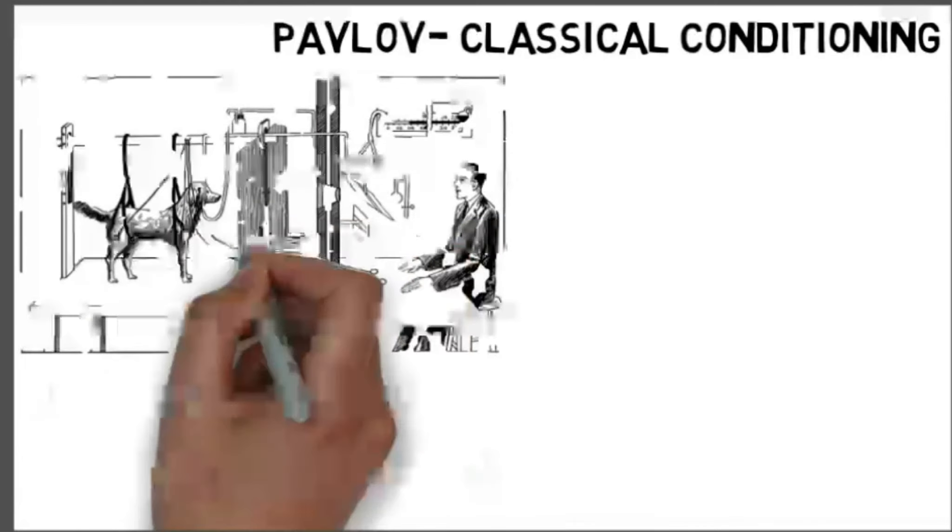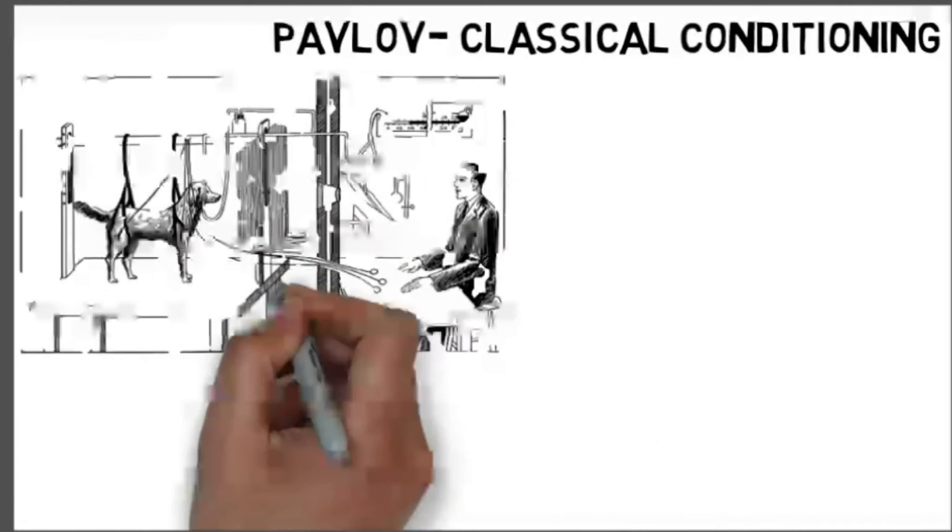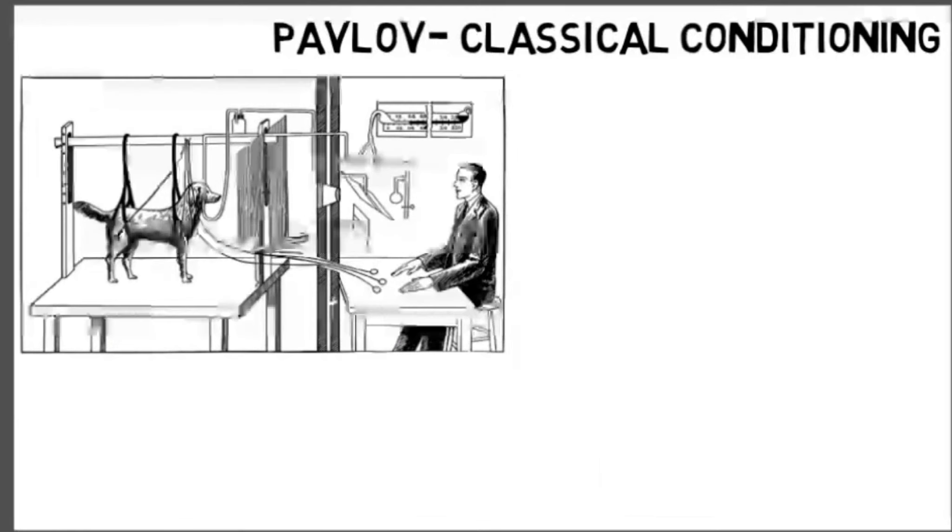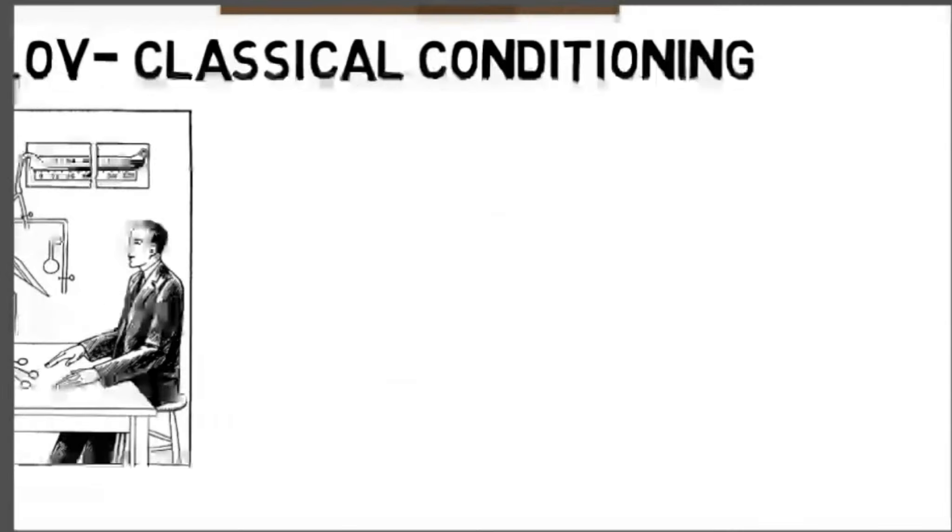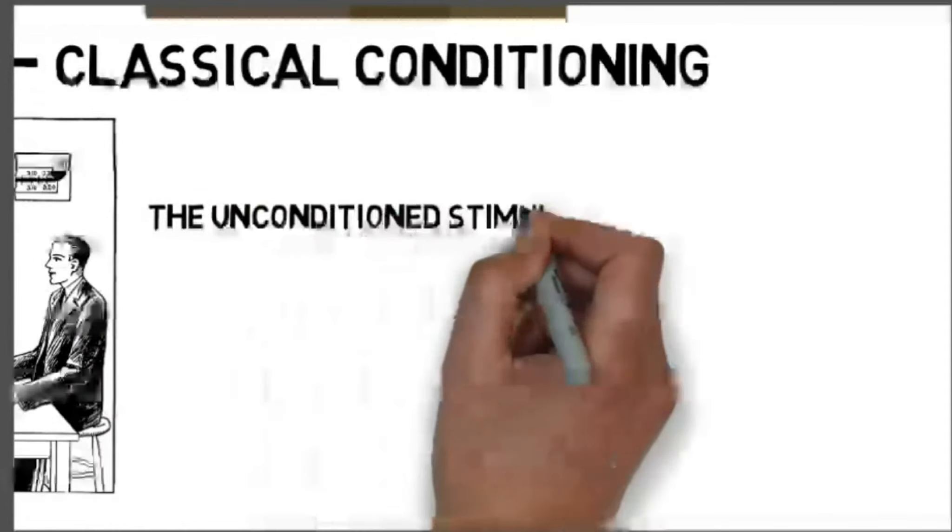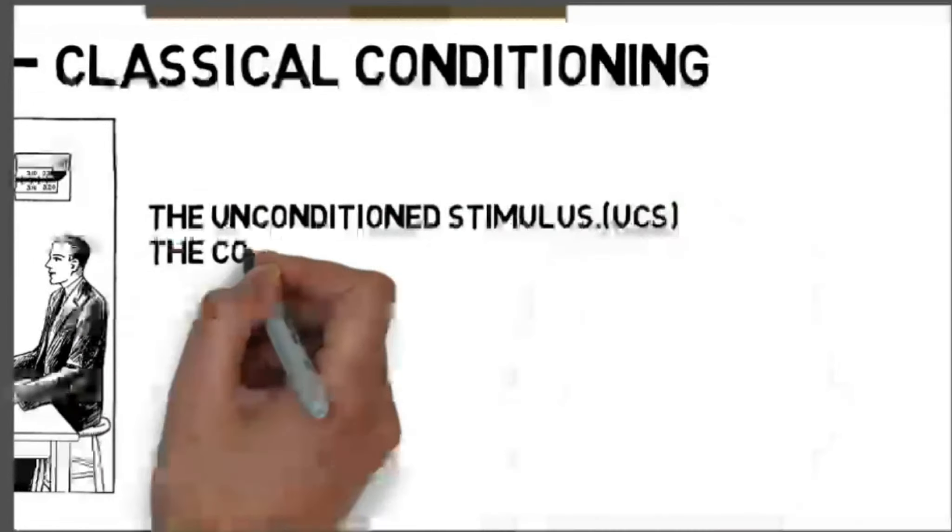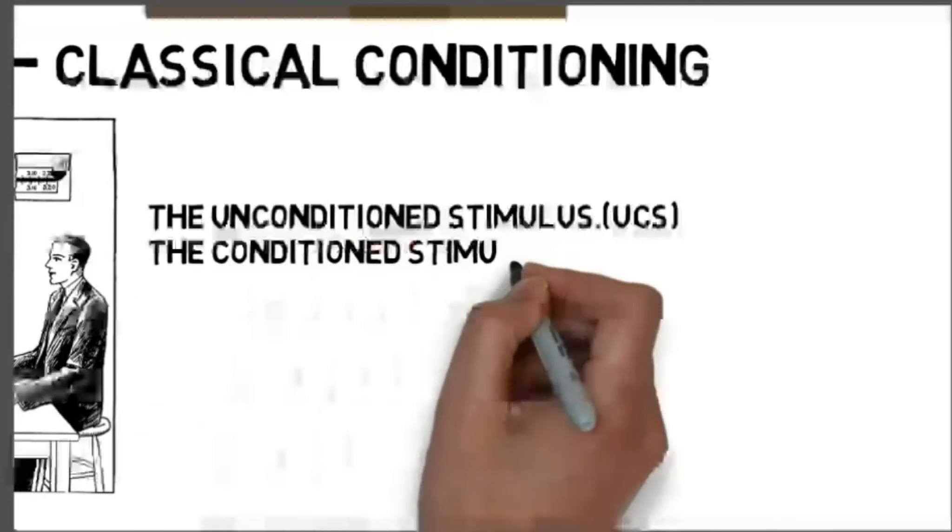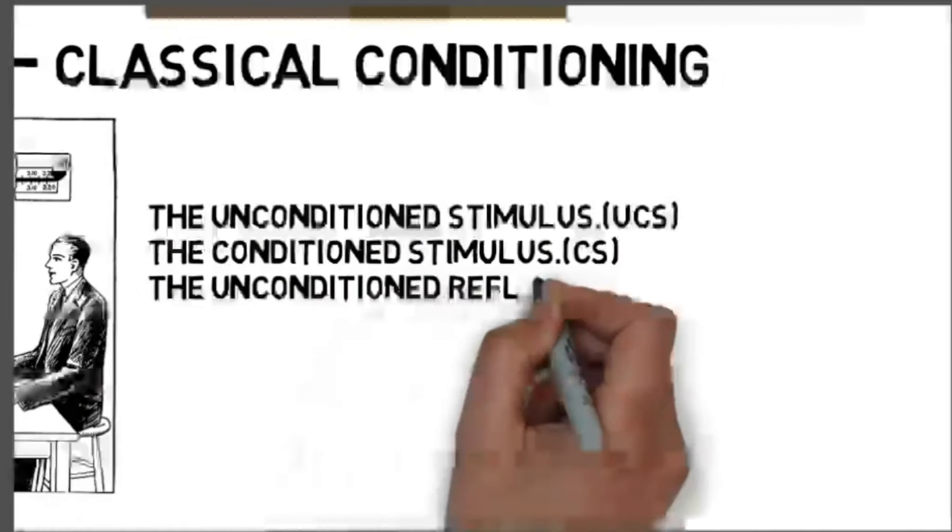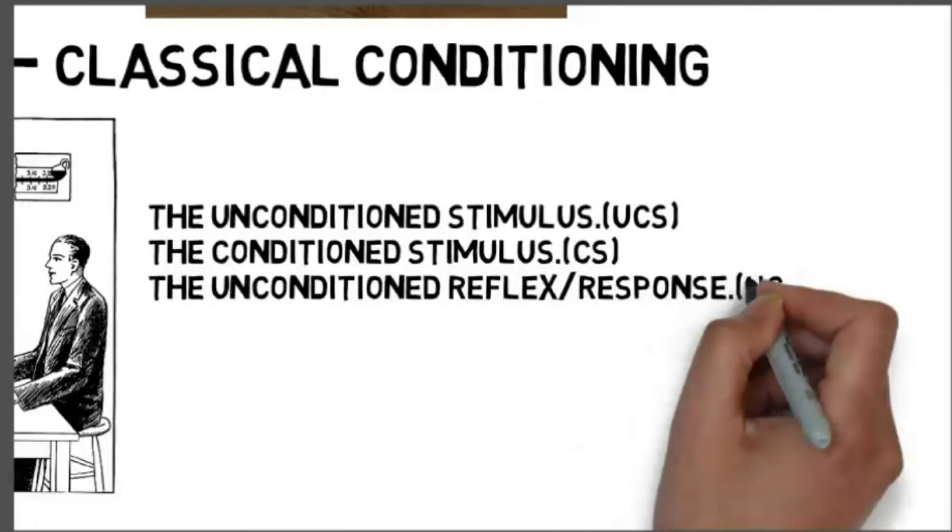We can gain a better understanding of classical conditioning by looking at the various components involved in his experiments. We have the unconditioned stimulus (the UCS), the conditioned stimulus (the CS), the unconditioned reflex or response (the UCR), and the conditioned reflex or response (the CR).